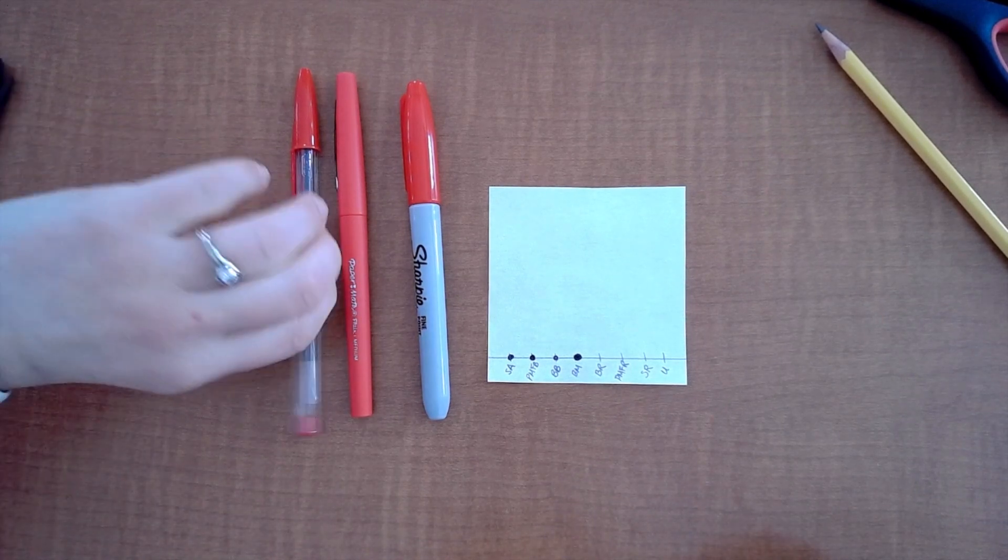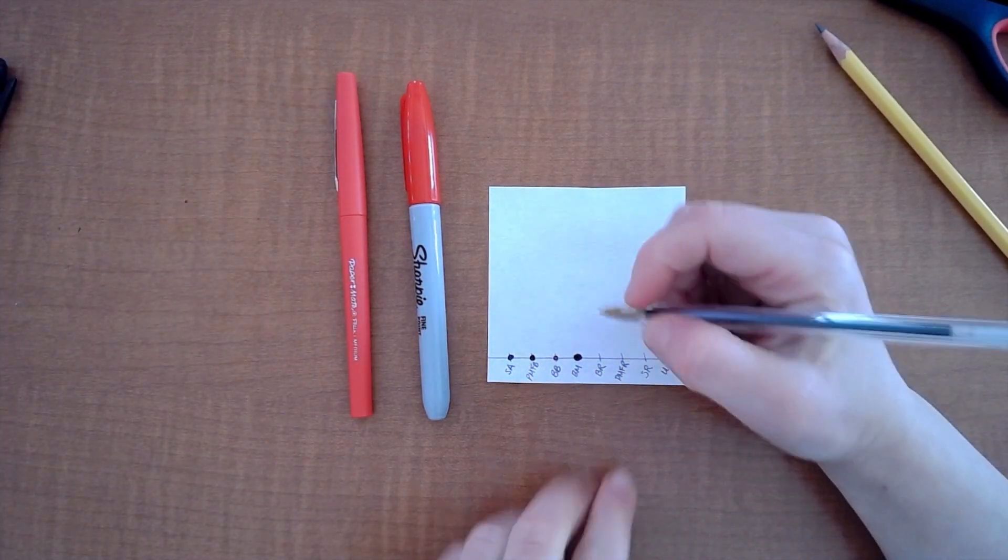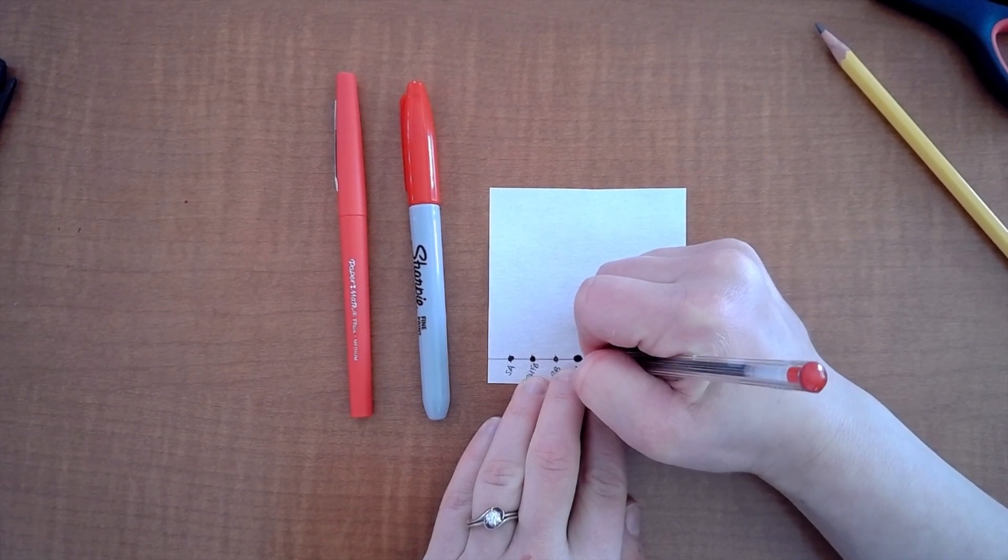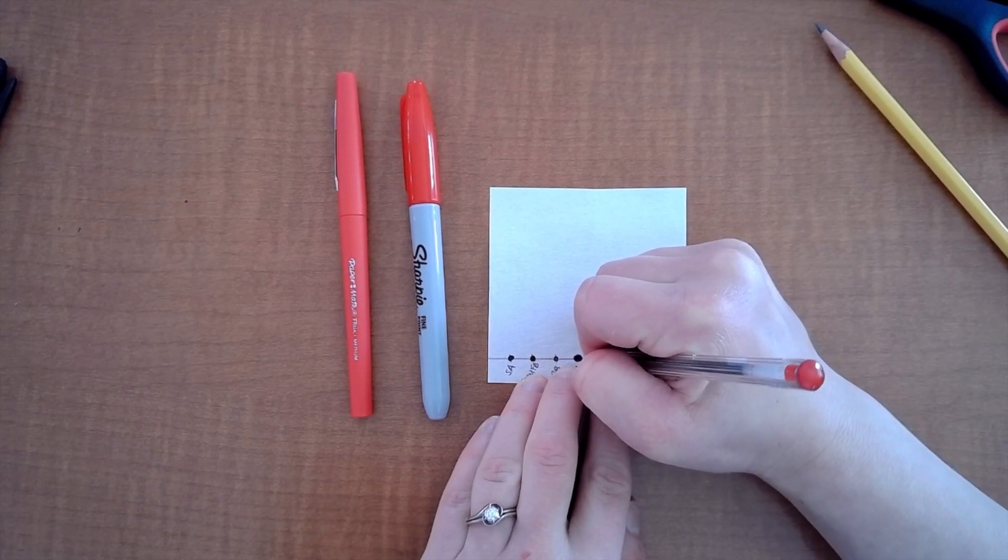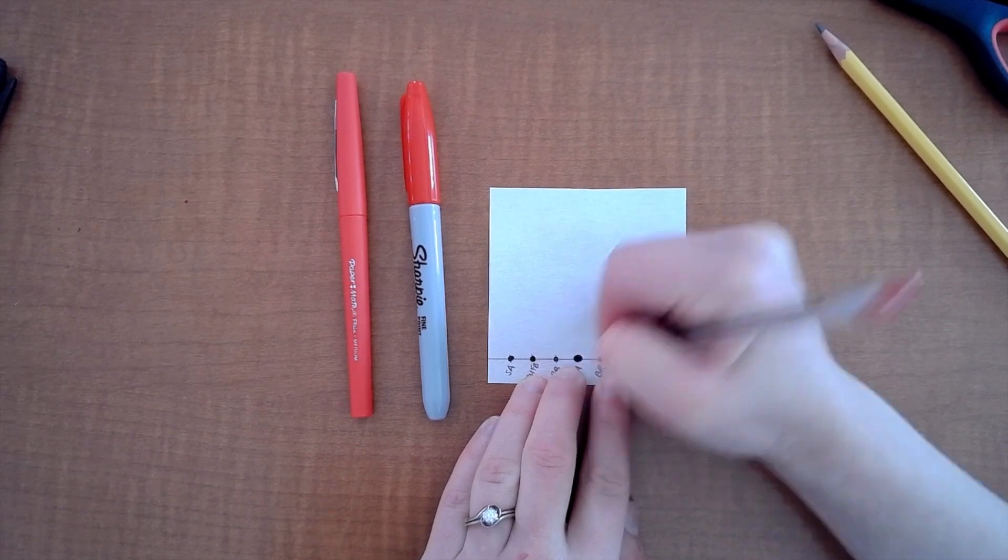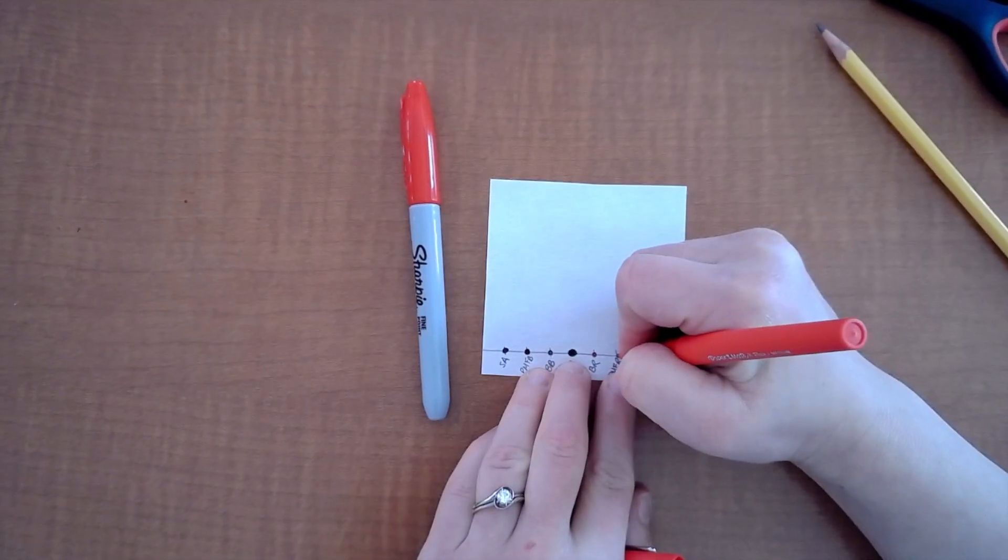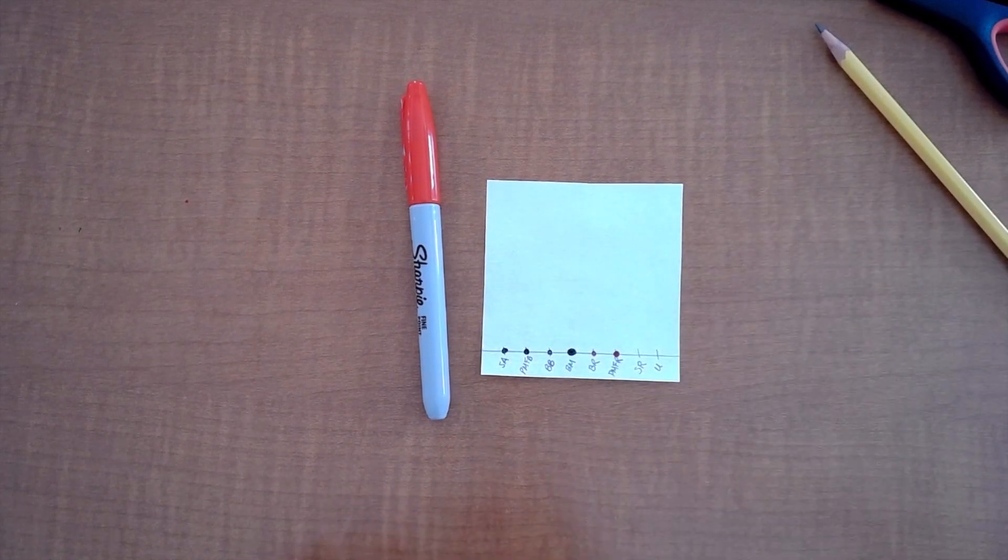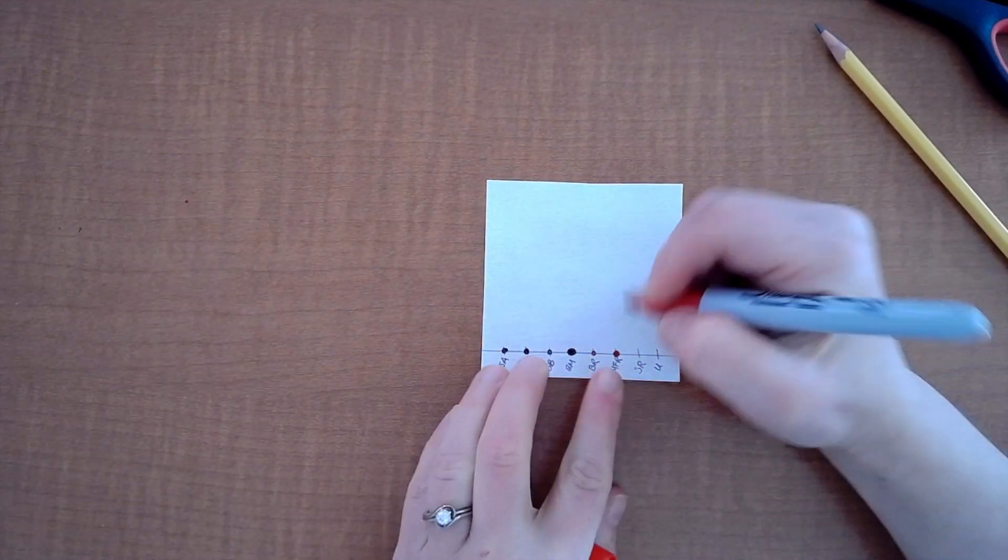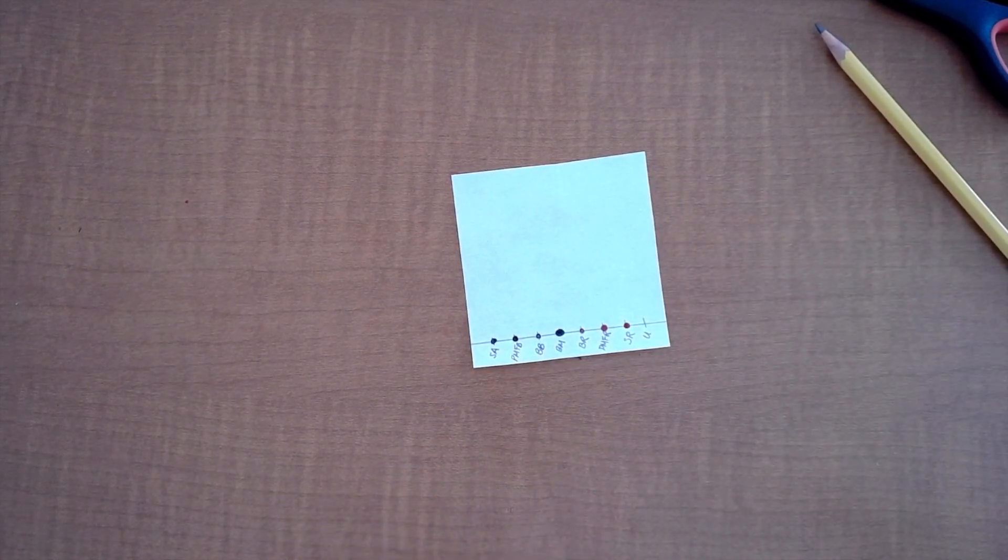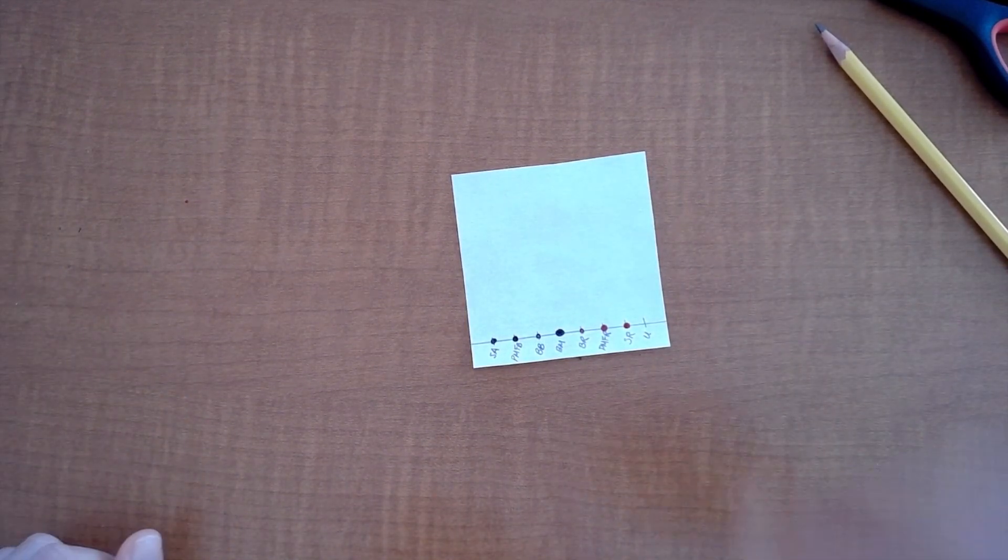Now notice I'm actually using the markers and pens. Everything else was pencil. You want to make sure that you only put the marking and markers where you need it. So here's our Bic red pen and here's our Paper Mate Flair red and here's our Sharpie red.